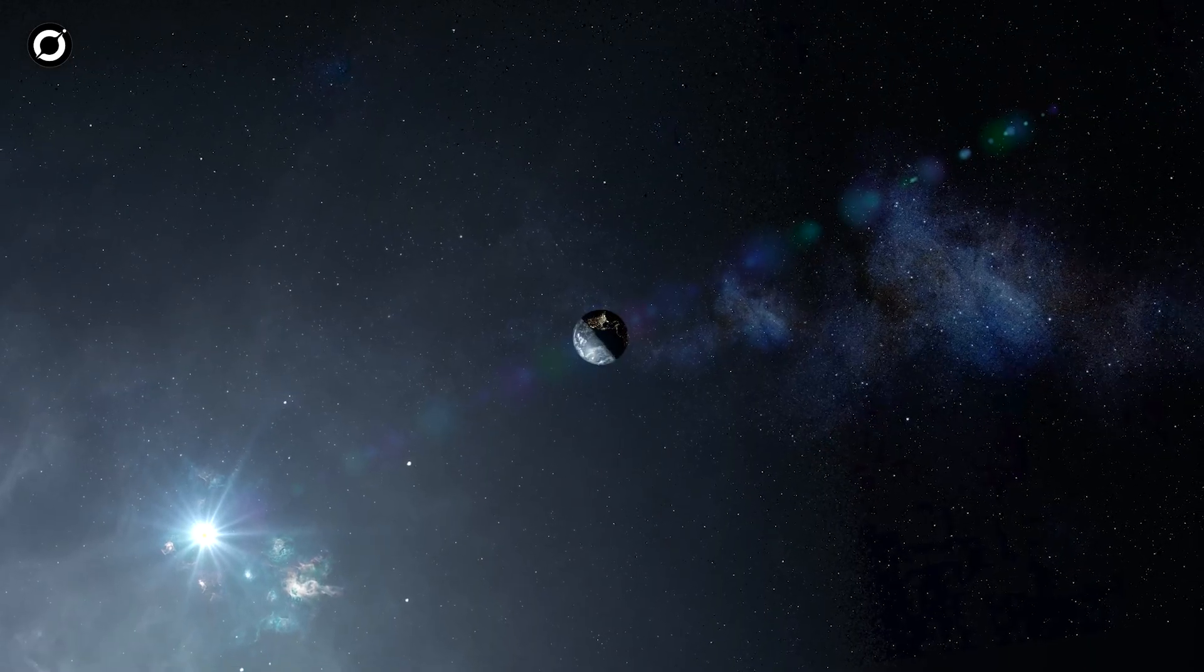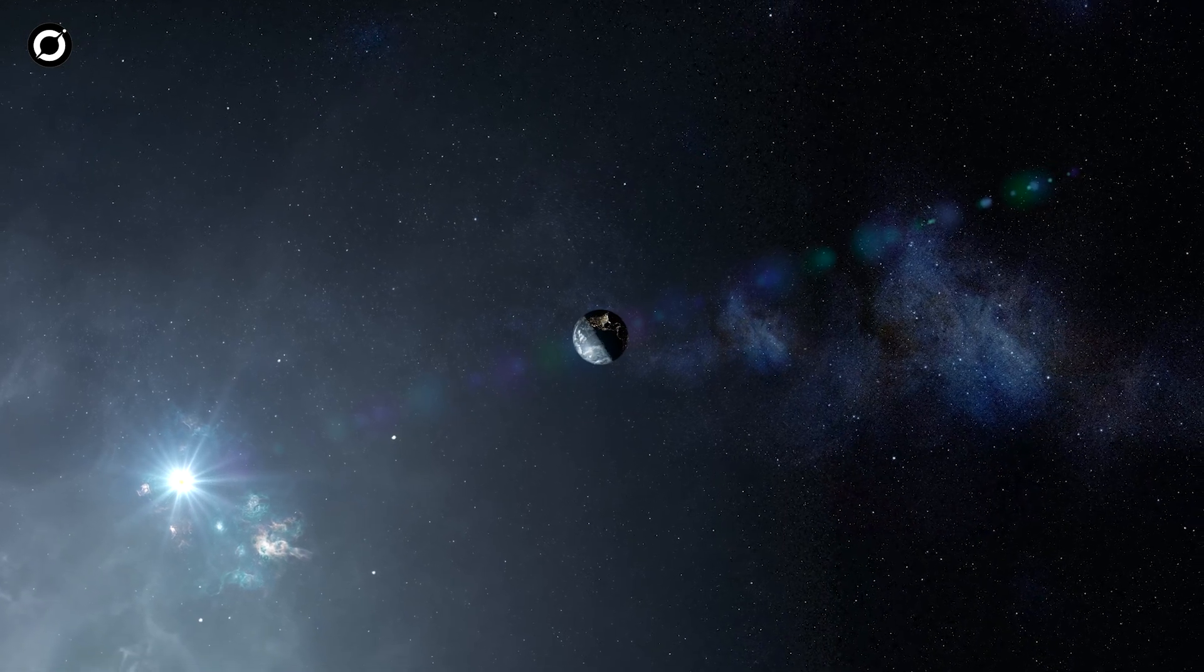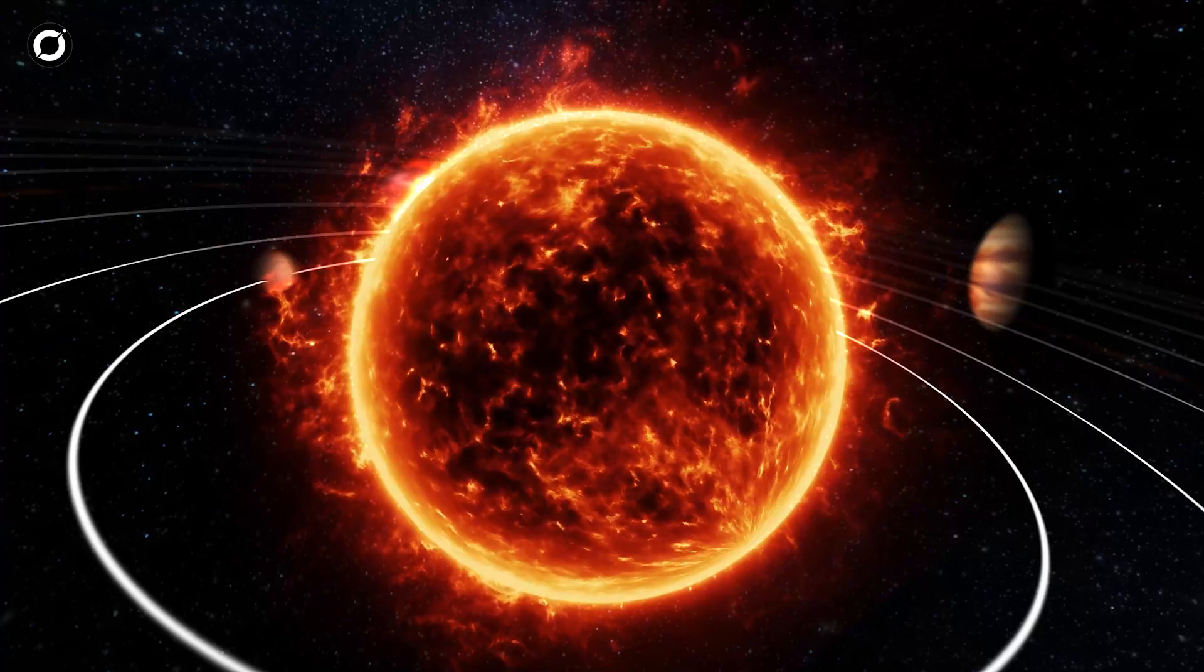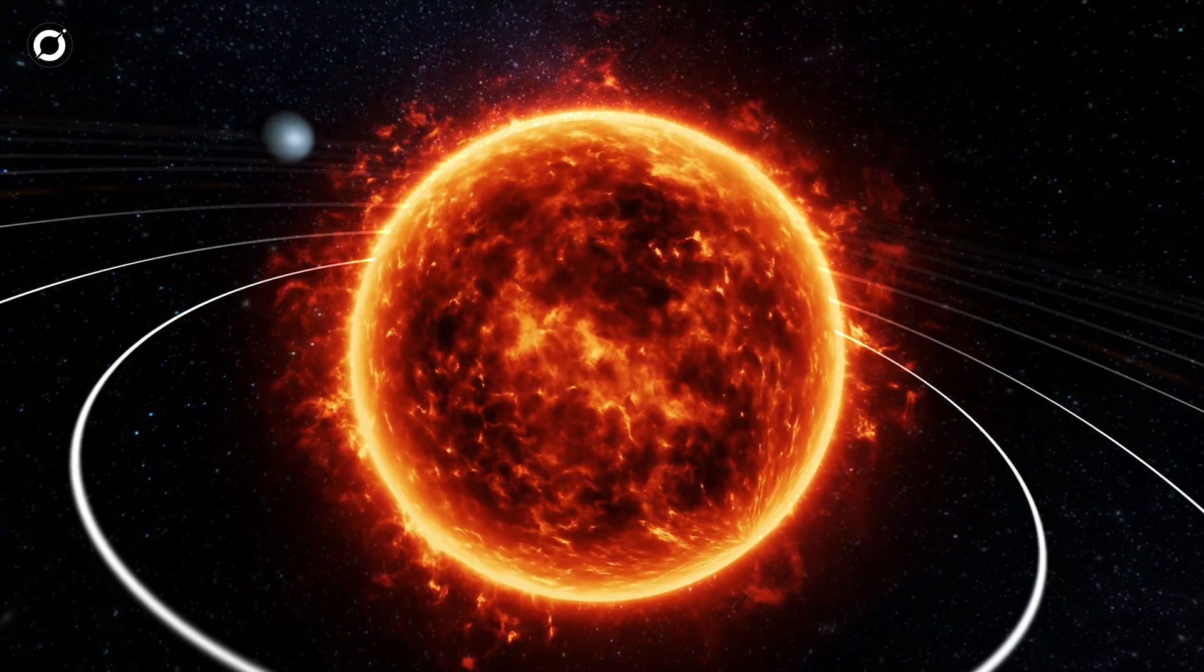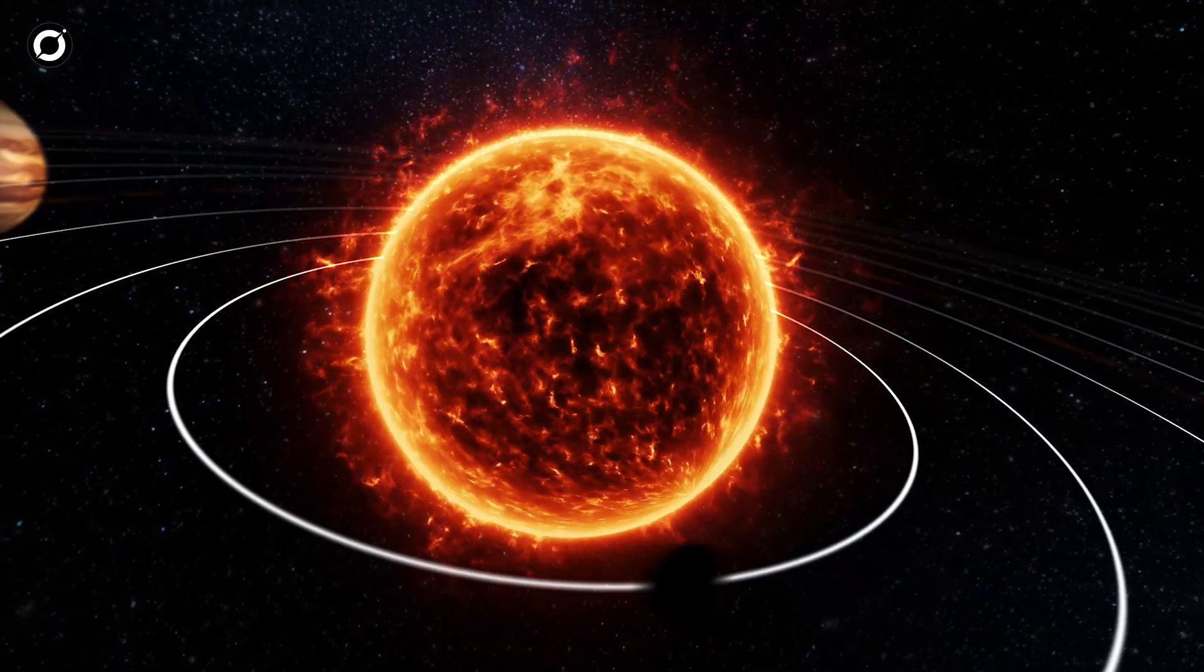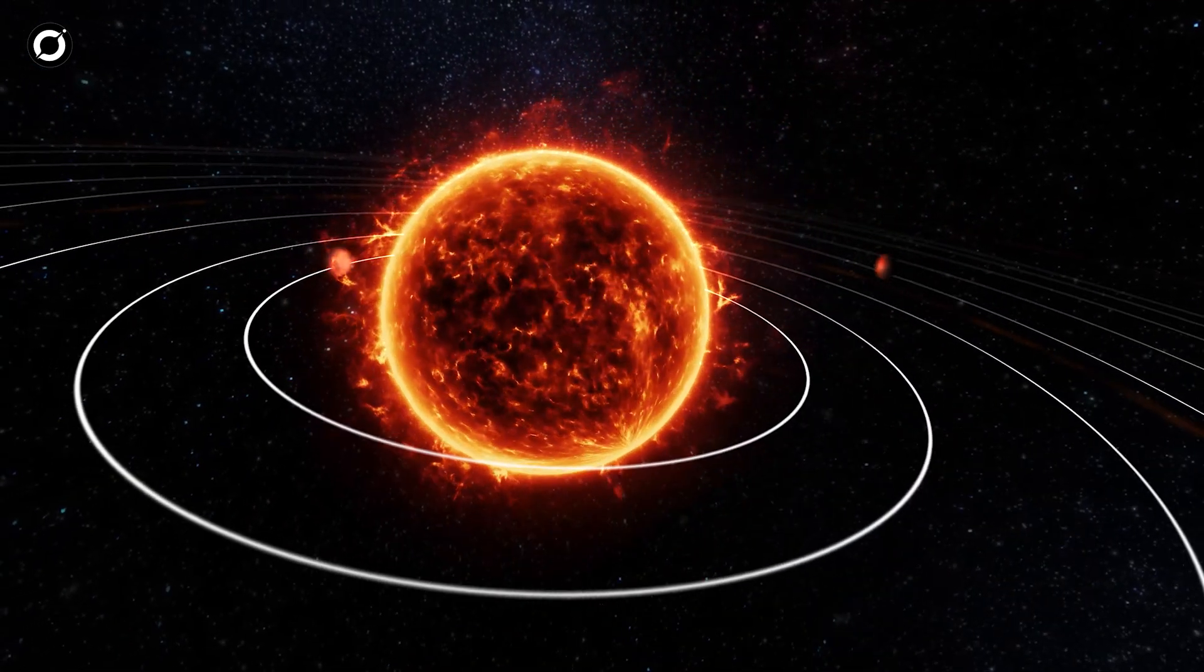If the black hole passed relatively far from Earth, like several light years away, the most noticeable effect would be gravitational disruption in the solar system, though it wouldn't necessarily be catastrophic.